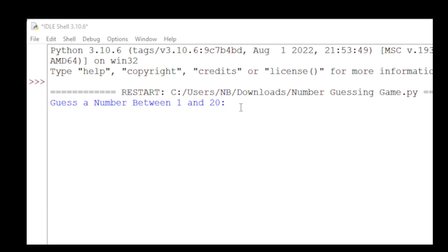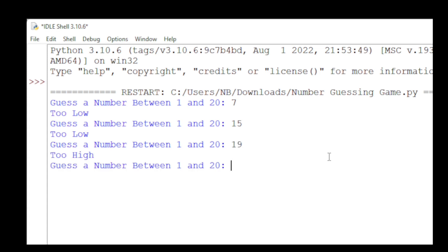So now it's asking for the user to enter a number. So I'll type 7. It's saying it's too low. So then we'll try 15. It's too low again. We'll try 19. It's too high. So then we'll try 17. It's too low. So then it must be 18. You guessed it. And I guessed it in 5 tries.